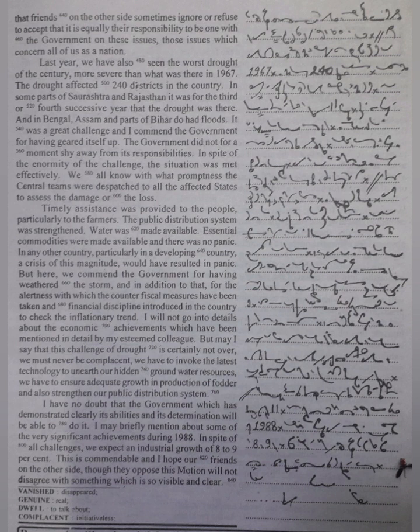Last year, we have also seen the worst drought of the century, more severe than what was there in 1967. The drought affected 240 districts in the country. In some parts of Saurashtra and Rajasthan, it was for the third or fourth successive year that the drought was there. And in Bengal, Assam and parts of Bihar did had floods.